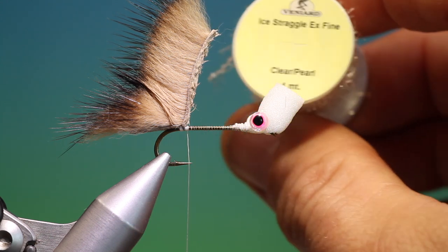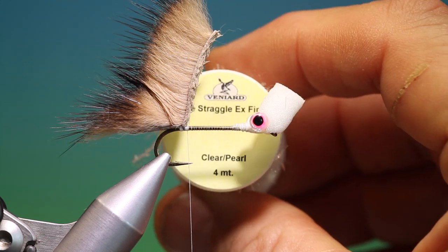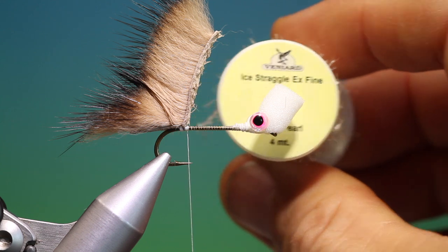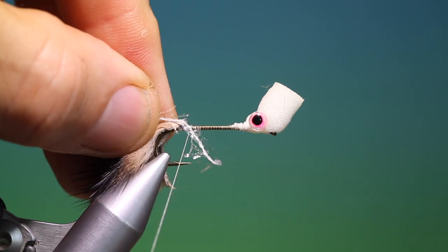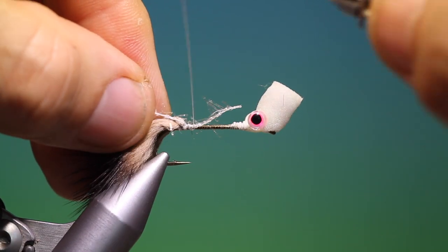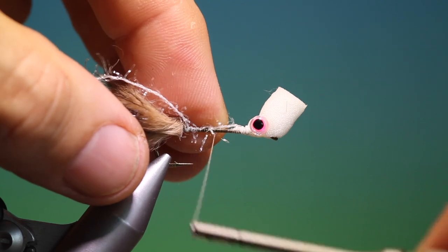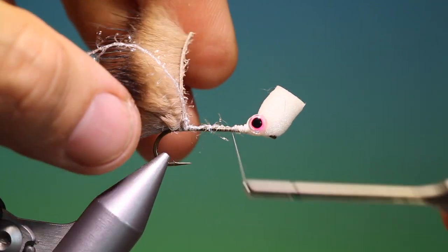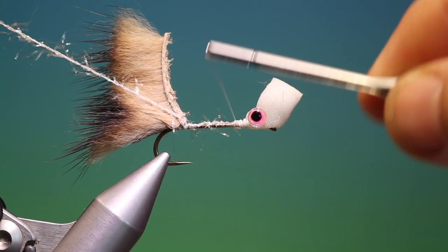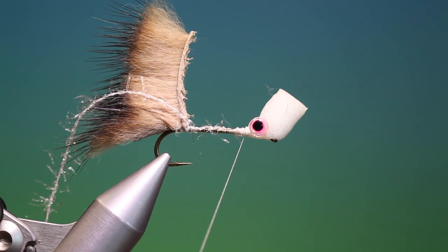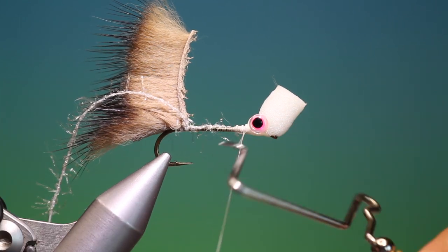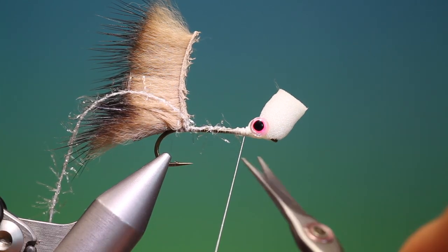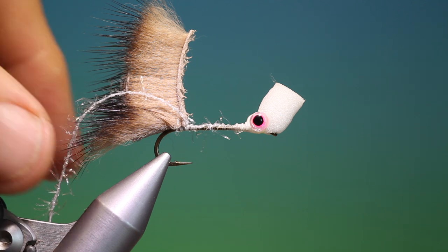Then I've got some ice straggle clear pearl. We need a length of that. So we'll just tie this in. I'll go forward, just like that. And then I'll take my whip finisher, come in here. We'll whip finish there. Remove our tying thread.